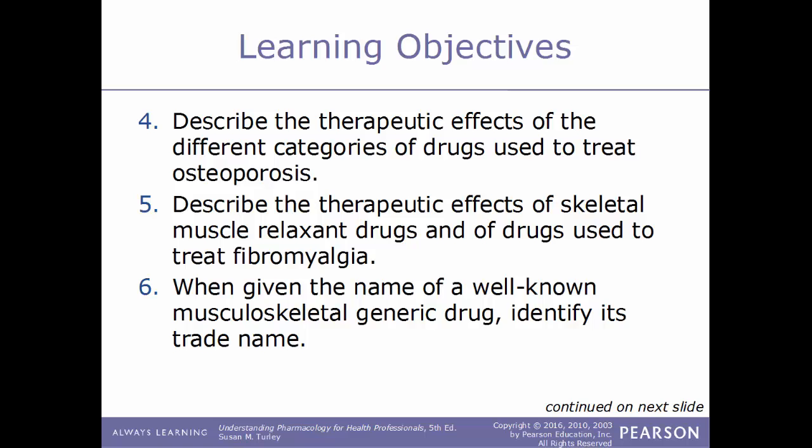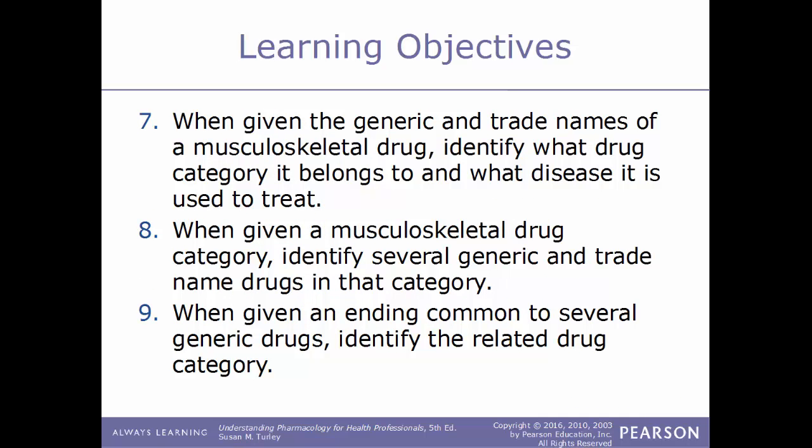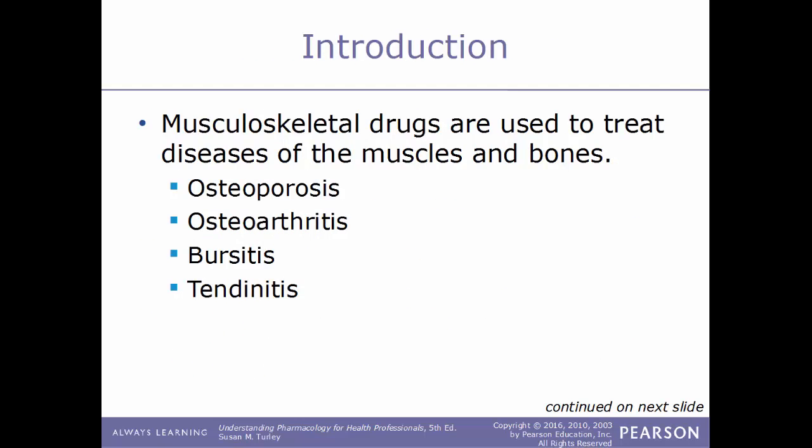Additional objectives include: describe the therapeutic effects of skeletal muscle relaxant drugs and of drugs used to treat fibromyalgia; when given the name of a well-known musculoskeletal drug, identify its trade name; when given the generic and trade names, identify what drug category it belongs to and what disease it is used to treat; when given a musculoskeletal drug category, identify several generic and trade name drugs in that category; and when given an ending common to several generic drugs, identify the related drug category.